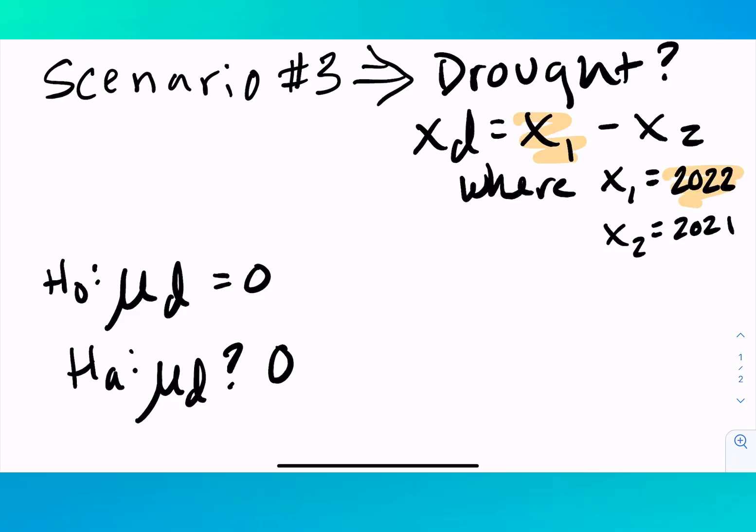Now here we want to see if there's a drought. And so we're taking the rainfall for 2022 and subtracting it by 2021. If there's a drought, you would expect that there's more rainfall in 2021, meaning that it would have a negative difference.